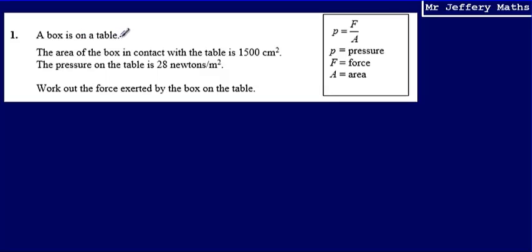Here we're told that a box is on a table. We're told that the area of the box in contact with the table is 1,500 centimetres squared. Then we're told that the pressure on the table is 28 newtons per metre squared.